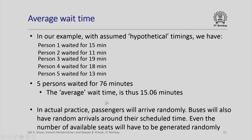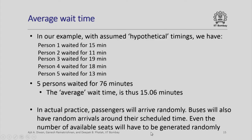What we note is that although we are illustrating programming of a bus queue using arbitrary numbers, in actual practice passengers will arrive randomly, buses will also arrive randomly — perhaps around their scheduled time but with some randomness — and even the number of available seats will have to be generated randomly. In one of the practice problems, we will illustrate how the random number generator function of C++ can be utilized to simulate this.